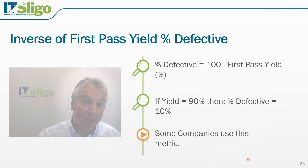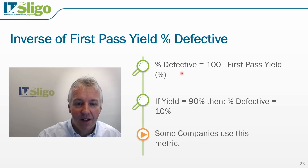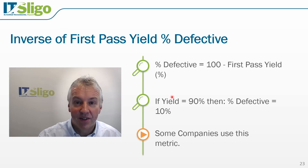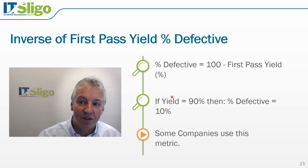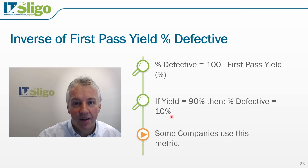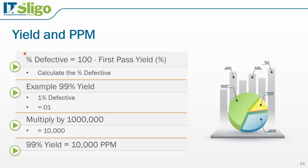When we talk about yield, we talk about how many were good, but we also want to look at how many are bad. The inverse of the first pass yield is percent defective — it's simply 100 minus the first pass yield. If our yield is 90%, then the percent defective is 10%. Some companies use this metric and ask 'what's our percent defective?' This then rolls into parts per million.